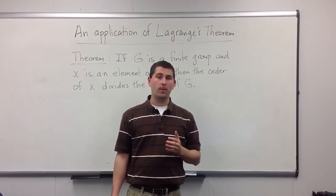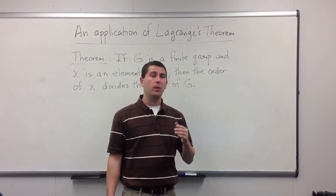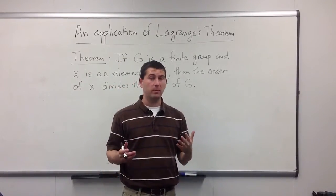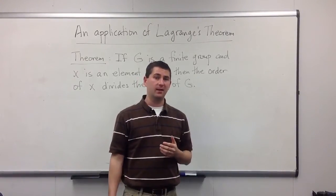In that case, we say it has infinite order. But in finite groups, that can't actually happen. We know eventually, by, say, the pigeonhole principle, we're going to have to get some repeat. And that first repeat will actually always be the identity element.